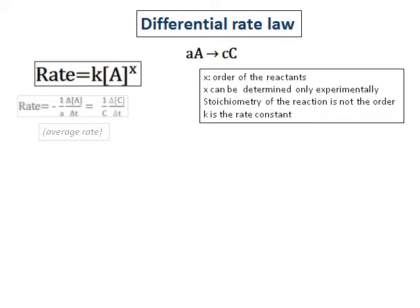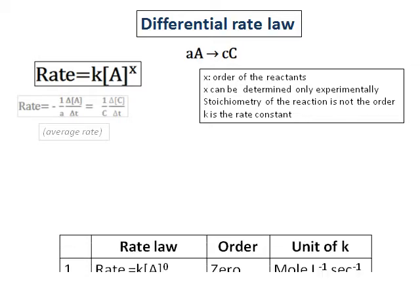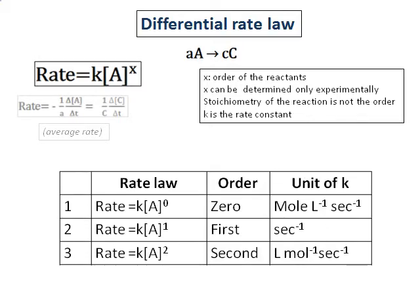The differential rate law also equals 1 over c, change in concentration of C divided by T. The letter K is called the rate constant. A is the reactant, and X is called the order of the reaction. X can be determined only by experiment — it has nothing to do with the stoichiometric coefficients a and c. A and C are the stoichiometry of the reaction, and X is the order. K is the rate constant, and it takes different units depending on the order of the reaction.